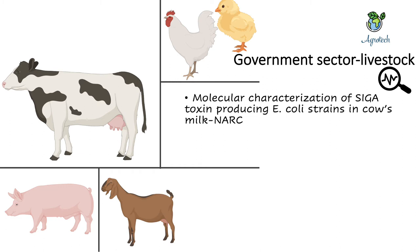Shiga toxin-producing E. coli is found in larger amounts in South Asian countries like Nepal, India, and Pakistan. I tried to find data on how many people in Nepal are suffering from Shiga toxin, but I could not find relevant information from the Central Bureau of Statistics. There is currently no treatment for Shiga toxin, making it one of the deadliest toxins.